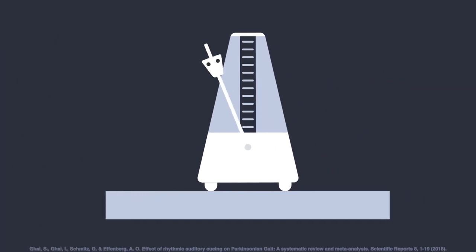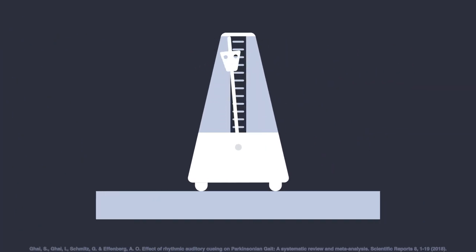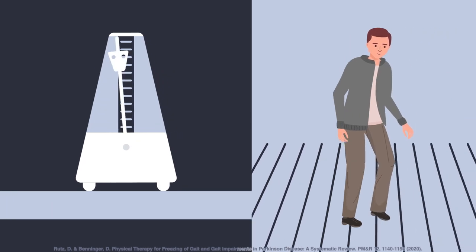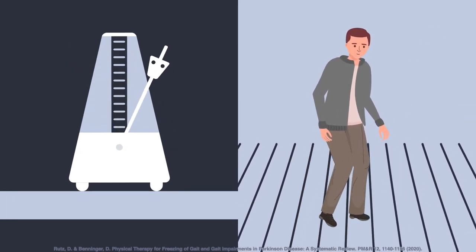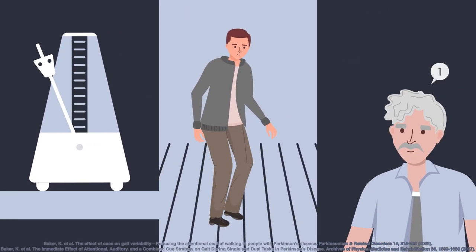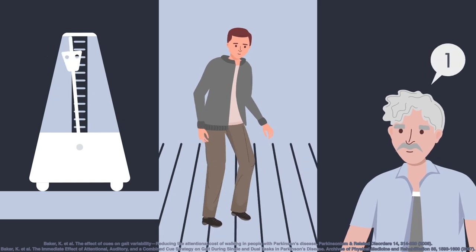Cueing can be delivered in many ways, such as rhythmic auditory cueing, which can be achieved using a metronome. Visual stimuli have also been explored in the experimental setting, and many professionals recommend cognitive cueing such as counting in one's head to help with movement.